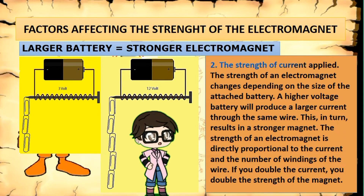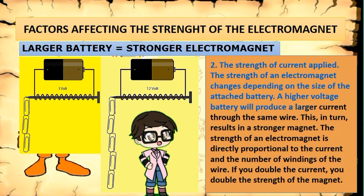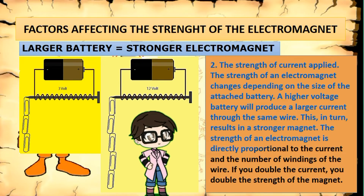The strength of current applied: the strength of an electromagnet changes depending on the size of the attached battery. A higher voltage battery will produce a larger current through the same wire, which in turn results in a stronger magnet. The strength of an electromagnet is directly proportional to the current and the number of windings of the wire. If you double the current, you double the strength of the magnet.